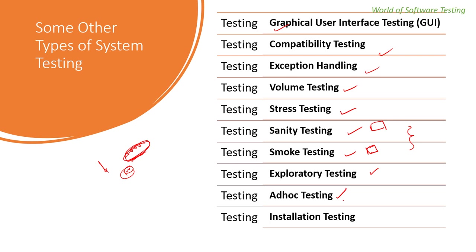Installation testing verifies that the software gets installed without any issues. Once an application is developed, it needs to be installed, and there should be no issues at the time of installation. This is the most important part of testing as installation is the very first interaction between the user and the product. The type of installation testing depends on various factors like operating system, platform, and distribution of software.